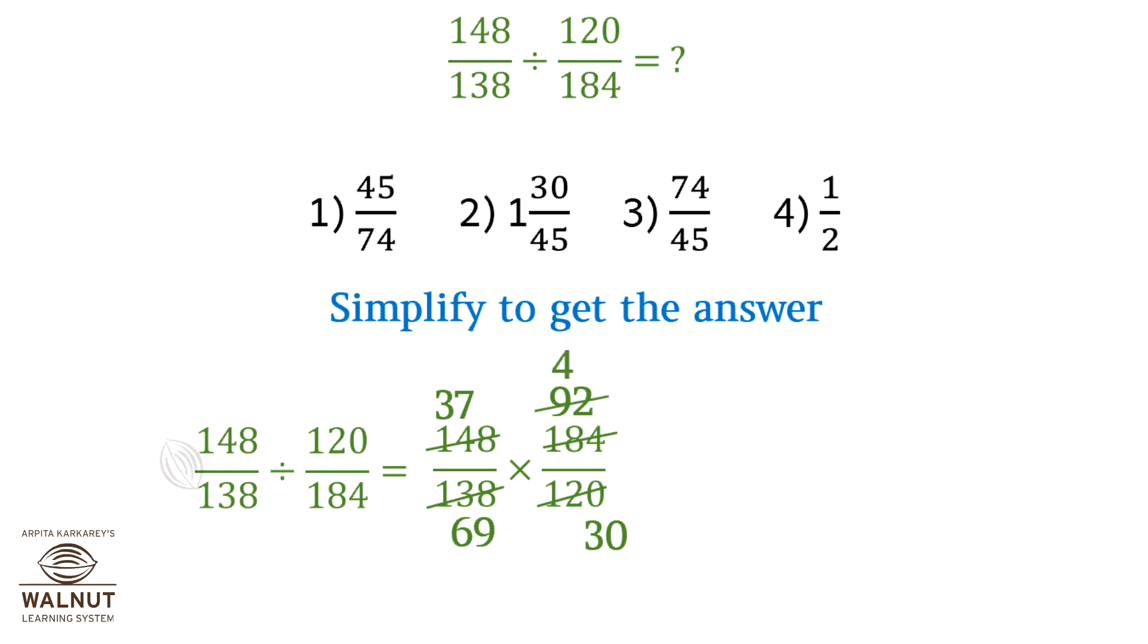23 times 4 is 92 and 23 times 3 is 69, and we can't reduce any further, which is equal to 37 upon 3 into 4 upon 30. Now we can reduce this further: 2 times 2 is 4, 2 times 15 is 30.